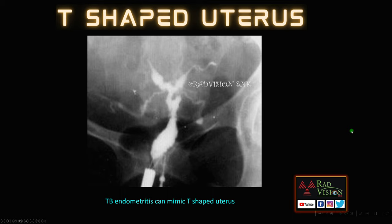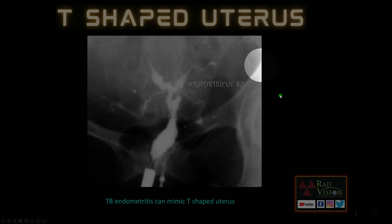Next, the T-shaped uterus: TB endometritis typically mimics a T-shaped uterus. Remember this T-shaped uterus in case of TB endometritis.